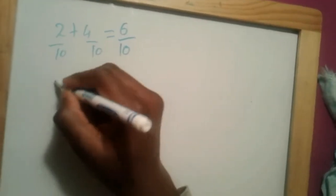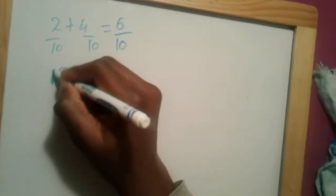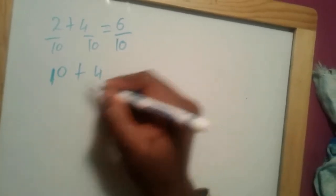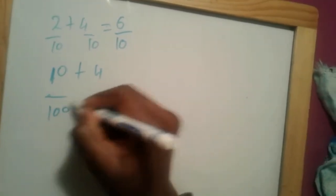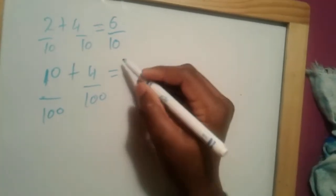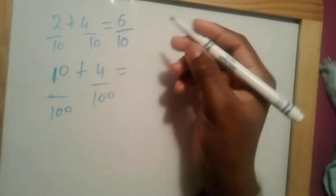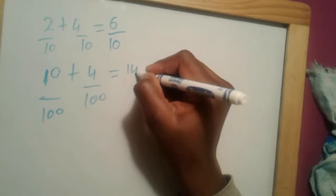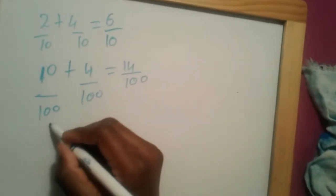For example, ten plus four out of a hundred would be fourteen out of a hundred.